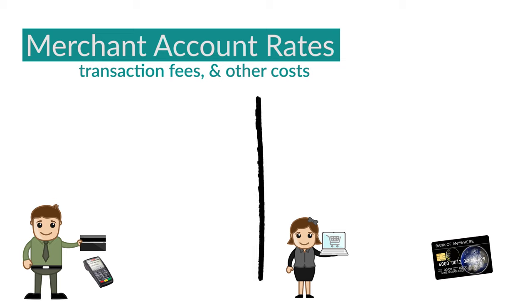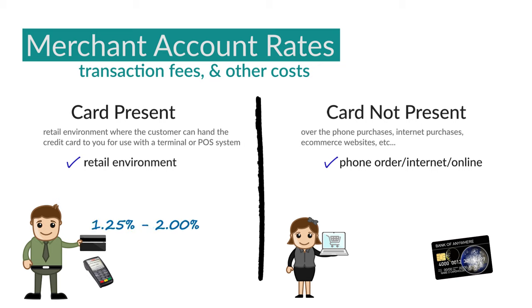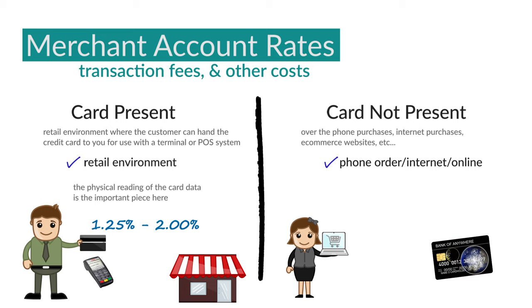Now let's move on to rate categories. There are two main merchant account rate categories driven by your card acceptance environment: card present and card not present. Card present means you have a retail environment where you can physically take the card from the customer and put it into a terminal. Card present rates range from about 1.25% up to 2%. Cards that are swiped, dipped, or use NFC contactless technology such as Apple Pay or Google Pay fall into the card-present category.